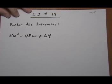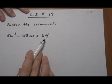6.2, number 19. Factor the following trinomial: 8w squared minus 48w plus 64.